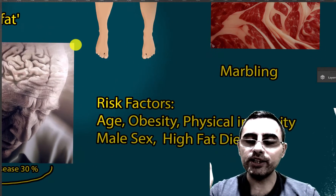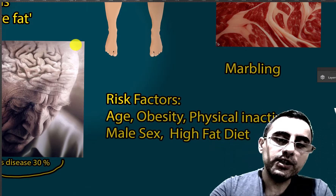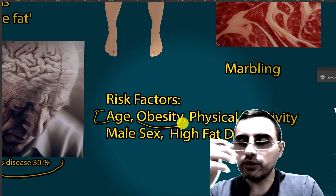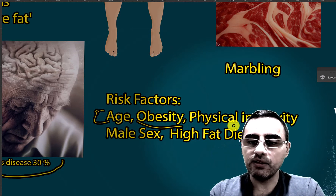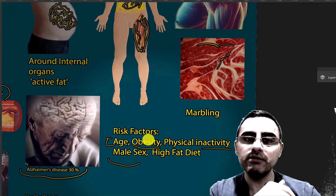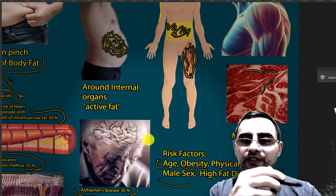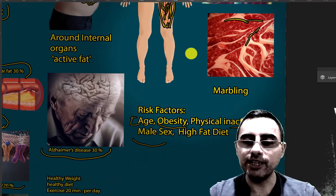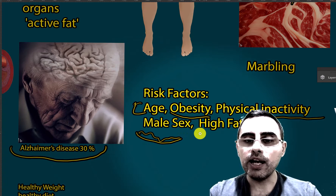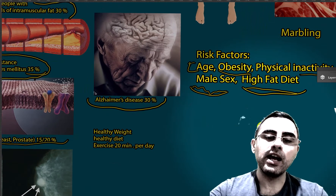The risk factors for intramuscular fat accumulation include age — it is more common in older individuals — obesity, sedentary lifestyle and physical inactivity, and male sex. While females generally have more total body fat, subcutaneous fat is more common in females, whereas abdominal fat and intramuscular fat are more common in males. A high fat diet is also a risk factor.